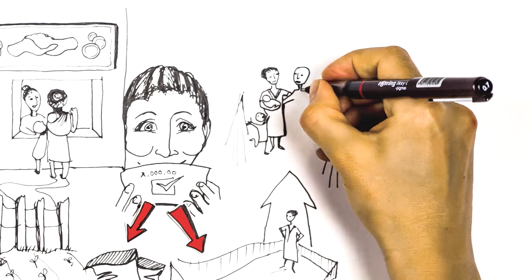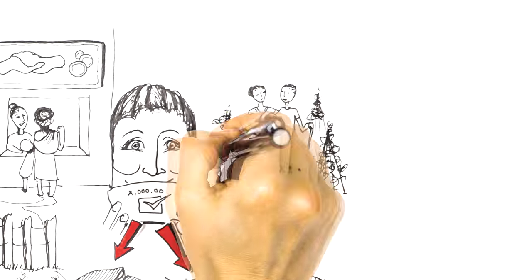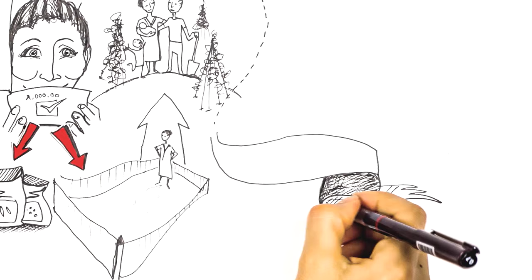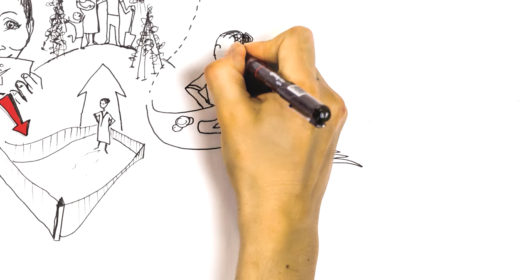This credit co-operative empowered Mesret, giving her not only economic independence, but autonomy and decision-making powers at home and in her community.